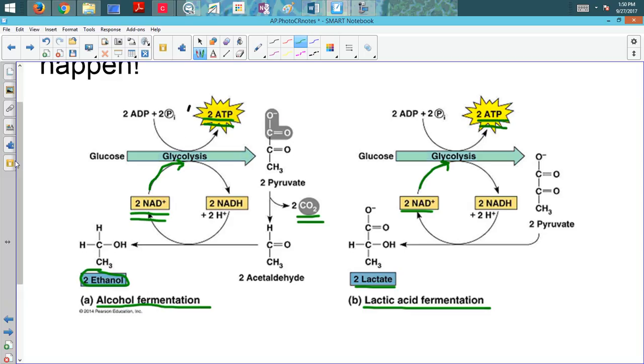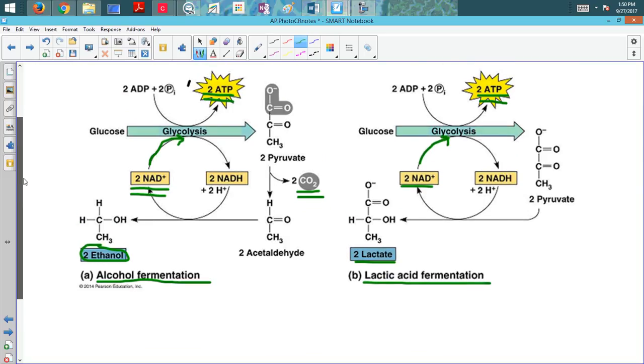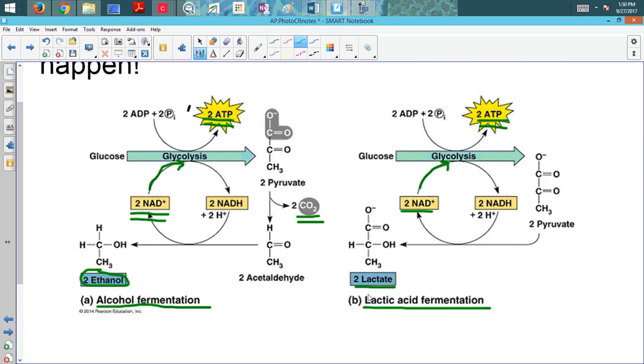So really inefficient, but it's energy. Some energy is better than none. So organisms that are going to use lactic acid, this is used by certain microorganisms in the production of yogurt and sauerkraut. But also, this happens in our cells when we're deprived of oxygen in our muscle cells. So let's say we're working out really hard and we're using up the oxygen and cell respiration just too quickly.